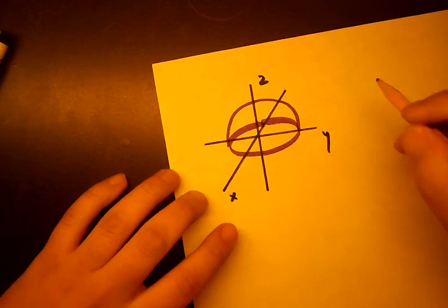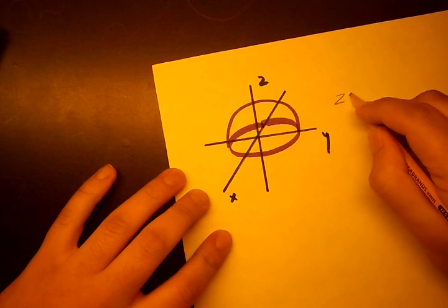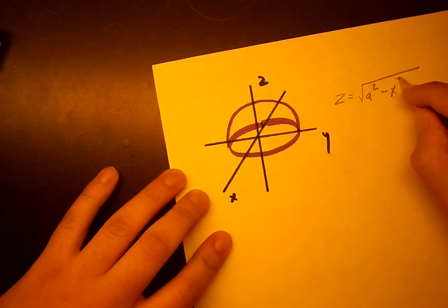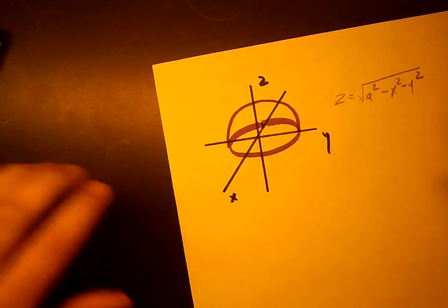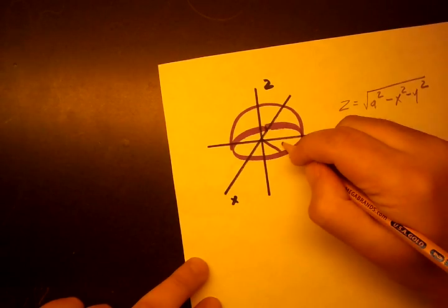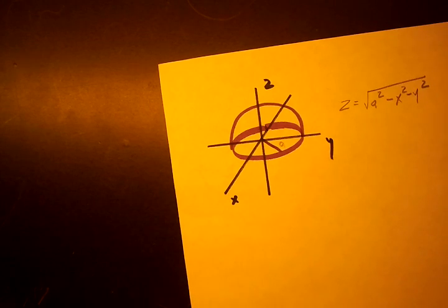So the equation for this hemisphere is given by z equals radical a squared minus x squared minus y squared, where a is going to be the radius of our sphere.